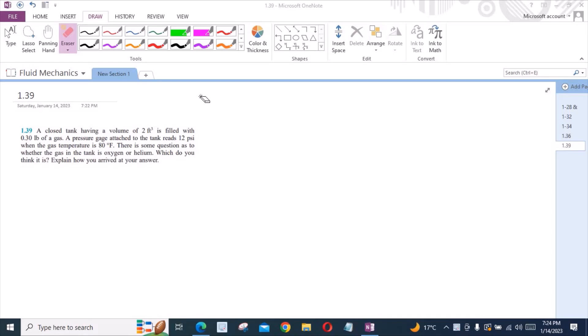According to this problem, a closed tank having a volume of 2 ft³ is filled with 0.30 lb of a gas. A pressure gauge attached to the tank reads 12 psi when the gas temperature is 80°F. There is some question as to whether the gas in the tank is oxygen or helium.